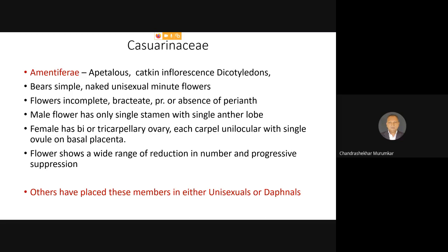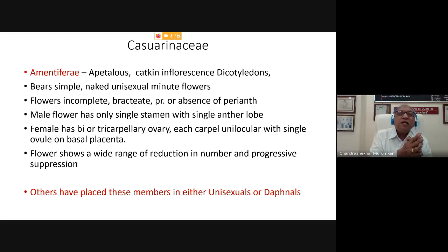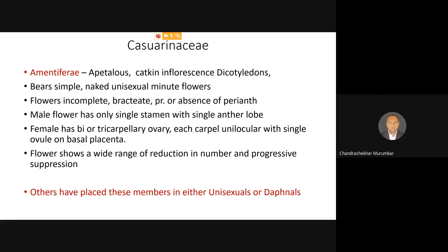Engler and Prantl found that there is one group called the Amentiferi group. This Amentiferi group is nothing but the unisexual group treated by Engler and Prantl and by Bentham and Hooker as 'Daphnales' by Eichler. Amentiferi is a form of inflorescence — ament inflorescence. This inflorescence is an apetalous catkin inflorescence of the dicots — the perianth is absent, only bracts are present, the flowers are sessile, the inflorescence is always drooping, and the flowers are very minute. This particular group is called the Amentiferi group.